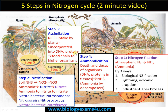The fourth step is ammonification. On death and decay of plants and animals, nitrogen-containing biomolecules like DNA and proteins in tissues are reconverted to ammonia by decomposers like bacteria, fungi, etc. That process of reconverting nitrogen-containing biomolecules to ammonia is called ammonification. This ammonia is released into the soil and may be directly used by plants or converted to nitrate.